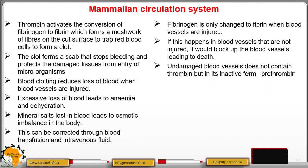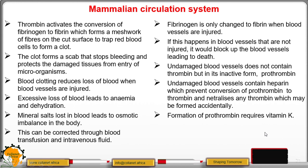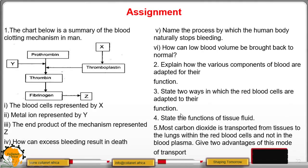Undamaged blood vessels do not contain active thrombin; it is present in inactive form called prothrombin. They also contain heparin that prevents conversion of prothrombin to thrombin and neutralizes any thrombin formed accidentally. Remember that formation of prothrombin requires the presence of vitamin K. This concludes the lesson.